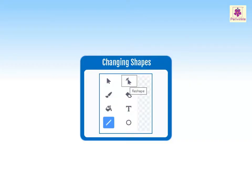To make it look unique, you can change the size, shape and appearance of a sprite. For example, let's change the shape of the dot sprite's mouth to show its smiling.